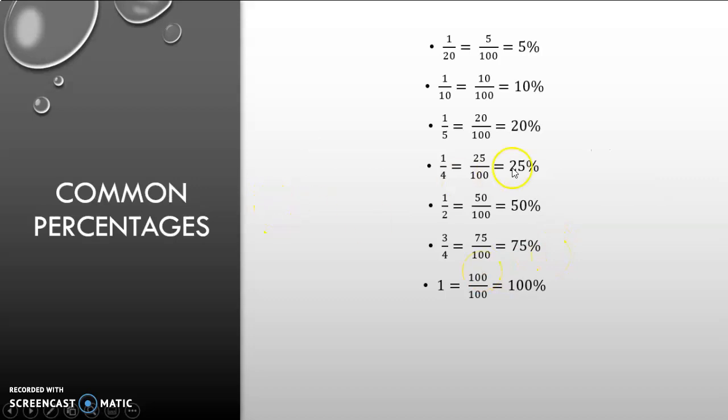So next up, common percentages that you need to know. 1/20 is equal to 5% because it is 5 over 100. How did we get it? We multiplied the top and the bottom with 5 since 20 times 5 is equal to 100. Remember, we multiply with 5 over 5 because it is one whole. And the multiplication property of 1 states that anything multiplied with 1 remains the same value. 1 over 10 is equal to 10%. We multiplied with 10 over 10 to get to 100.